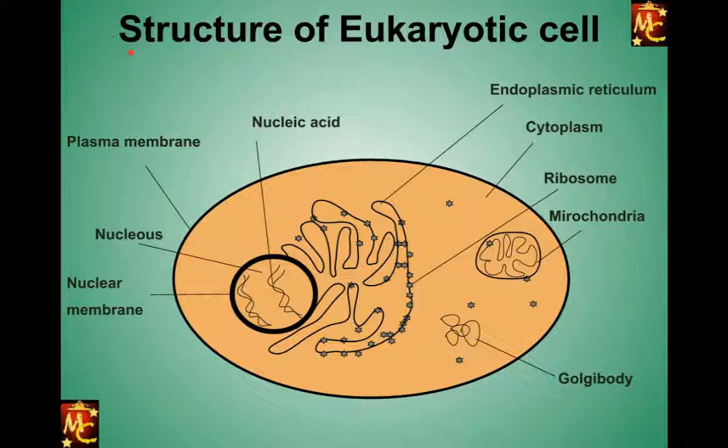Eukaryotic cells are the complex cell type of system. Prokaryotic cells are the simpler cell type, which originated at the beginning of life — when life started on Earth, it emerged as prokaryotic cells. Prokaryotic cells don't have a nucleus; their DNA is spread throughout the cytoplasm.